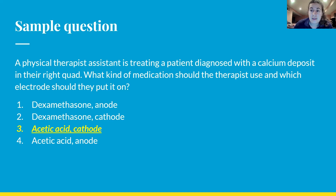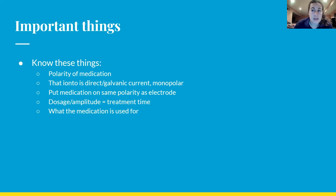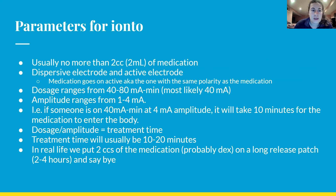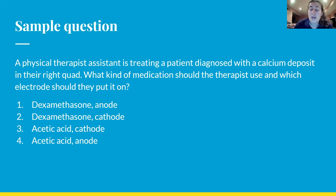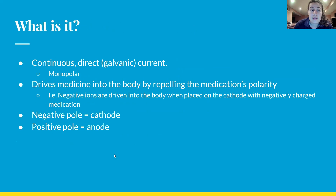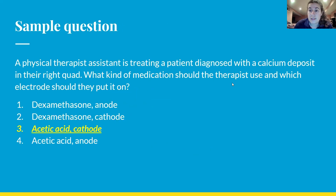The answer is acetic acid, cathode. Remember — polarity of the medication: acetic acid is negative and it's used to break up calcium deposits. The patient has calcium deposits, so we use acetic acid. Since it's negative, we put it on the electrode with the same polarity — the cathode — which drives it into the skin. Acetic acid is essentially vinegar, which can dissolve calcium — we actually demonstrated that in chemistry class once.